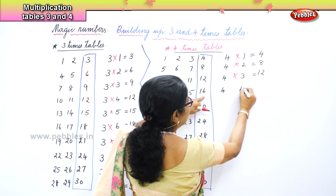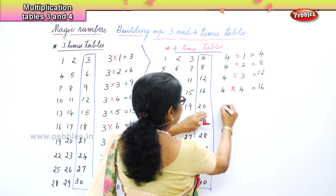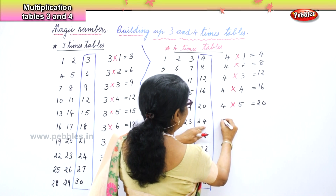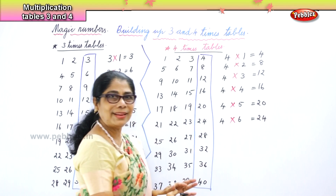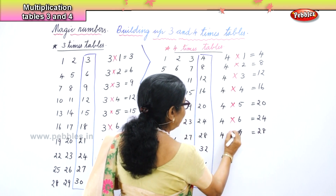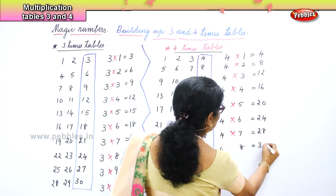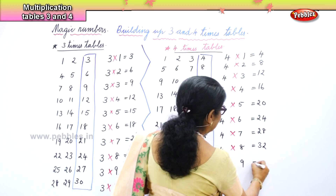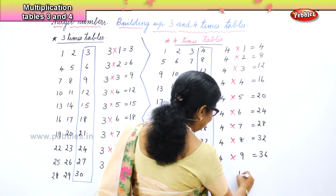Next — four fours are sixteen. And we put the sign here. You see how easily we build the four times table! Next — four fives are twenty. Then we build four sixes are twenty-four. Next — four sevens are twenty-eight. Next — four eights are thirty-two. Then four nines are thirty-six. How easily we build! And finally you have four tens are forty.